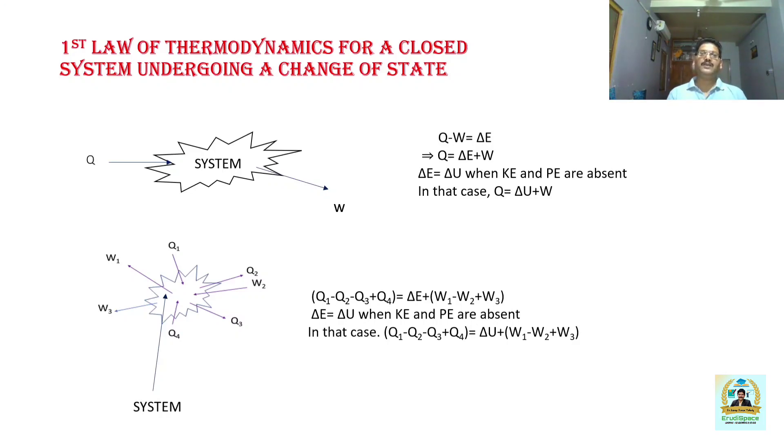For heat transfer, heat transfer to the system is taken as positive and heat transfer from the system is taken as negative. But when it comes to work transfer, work done by the system is taken as positive and work done upon the system is taken as negative. W1 is given a positive sign because this is the work done by the system, whereas when it comes to W2, it has been given negative because here work is done upon the system. Similarly, when it comes to Q1, it is given a positive sign because this is the heat transfer to the system. Q2 has been given a negative sign because this is the heat transfer from the system.